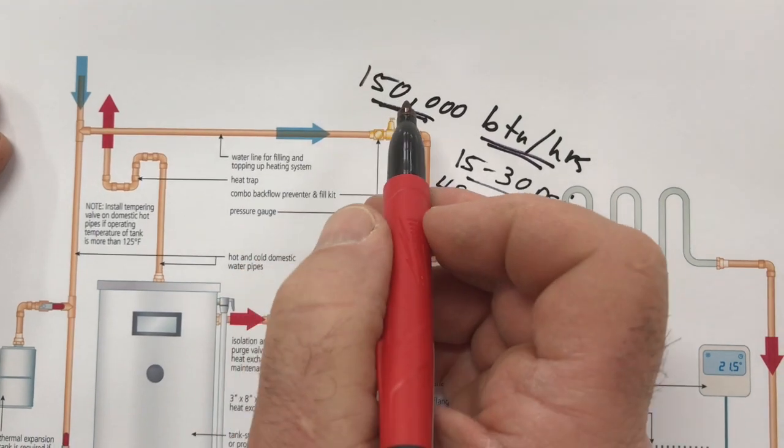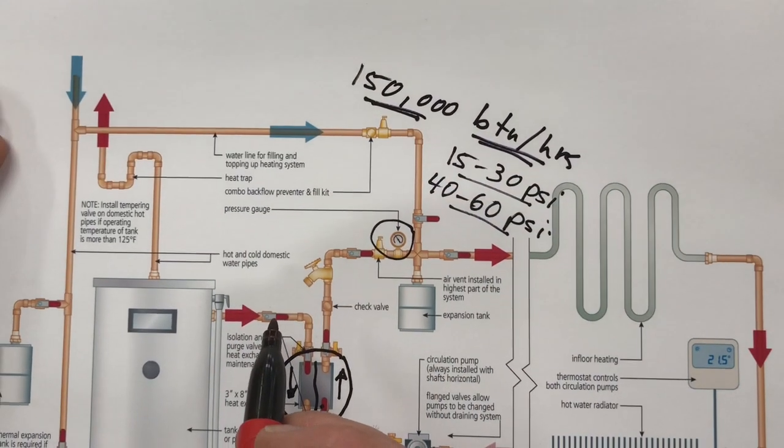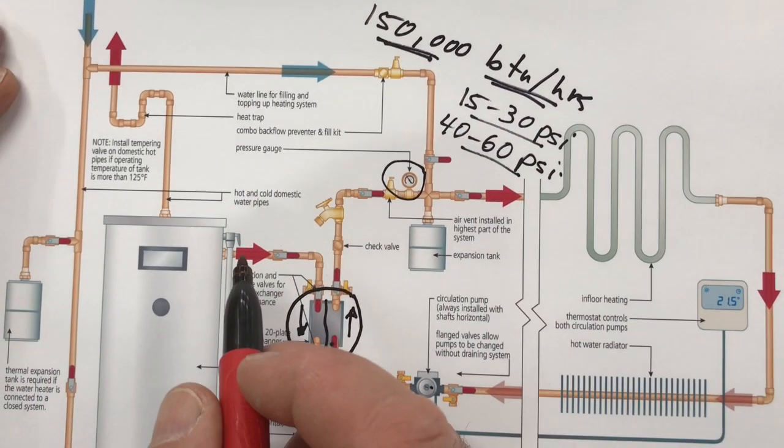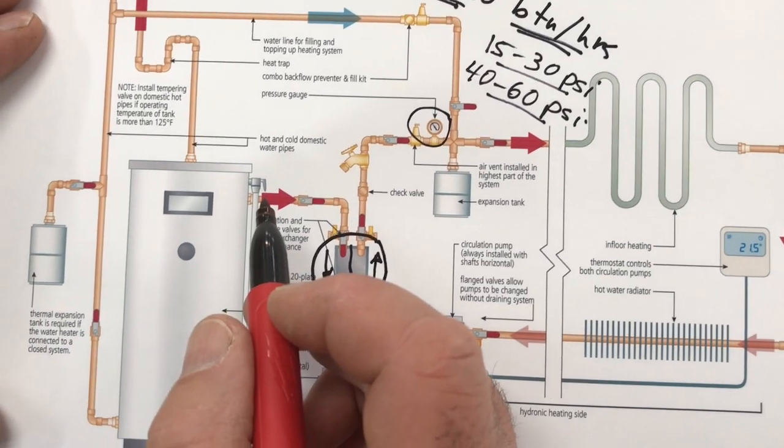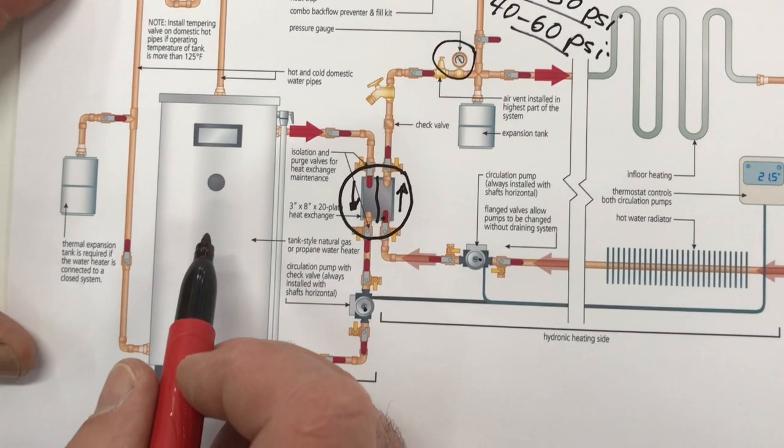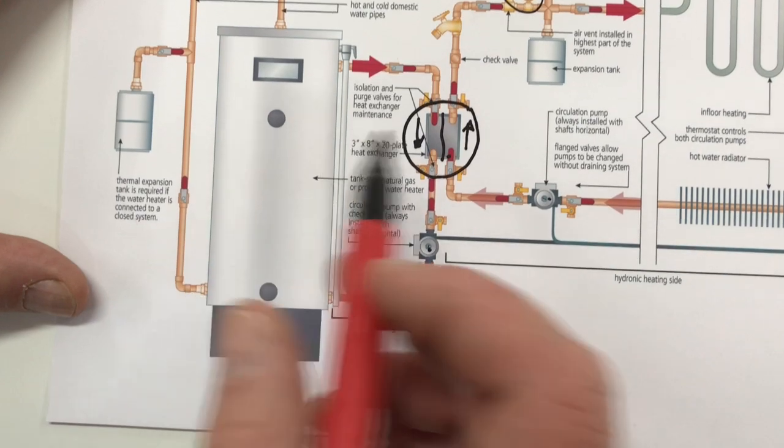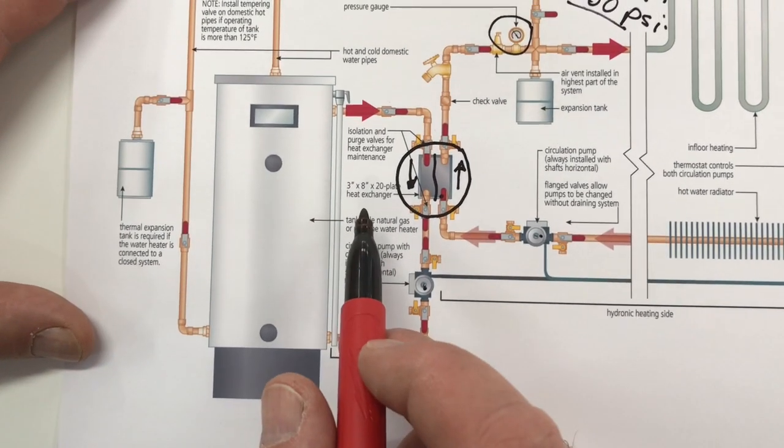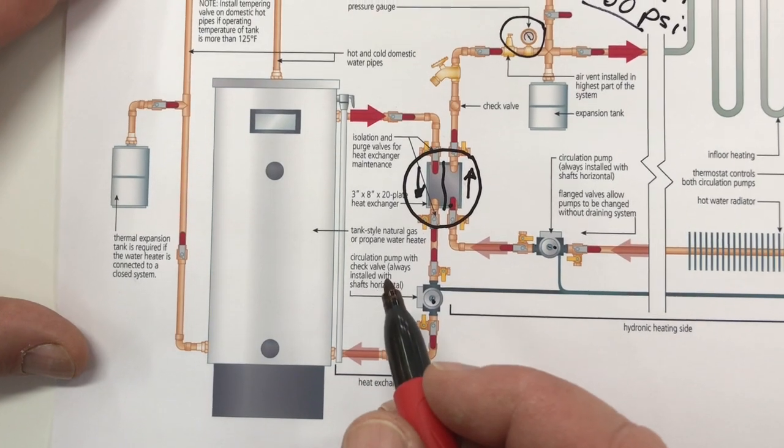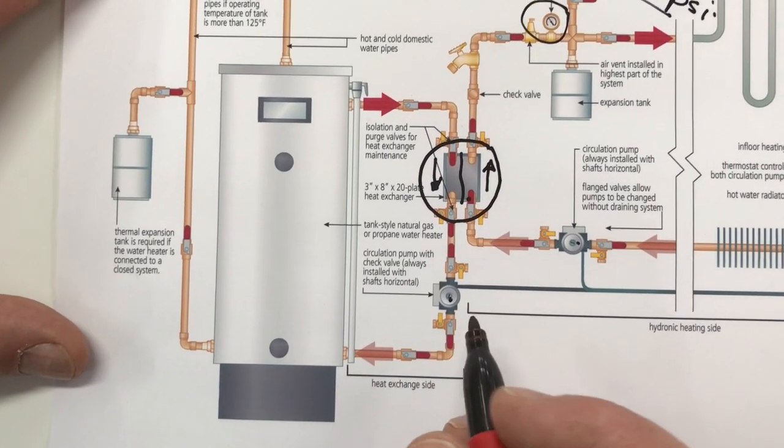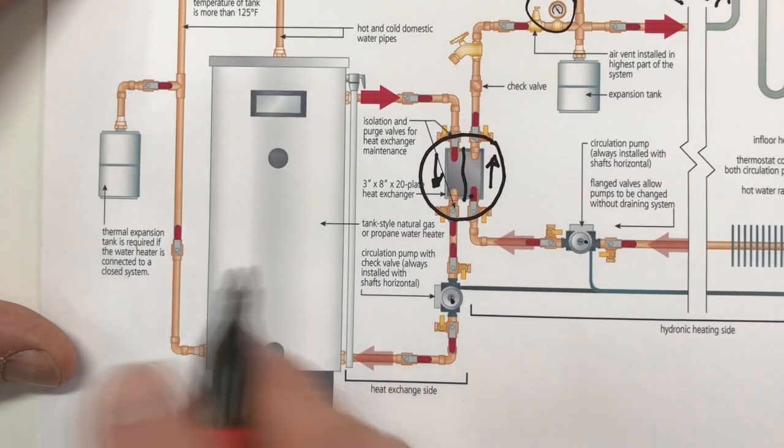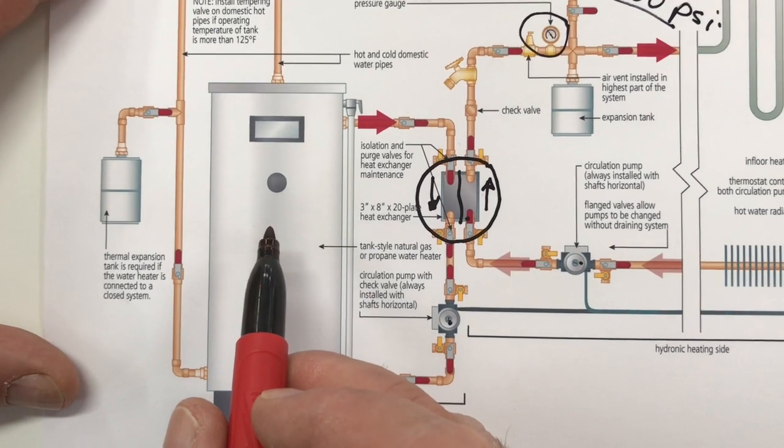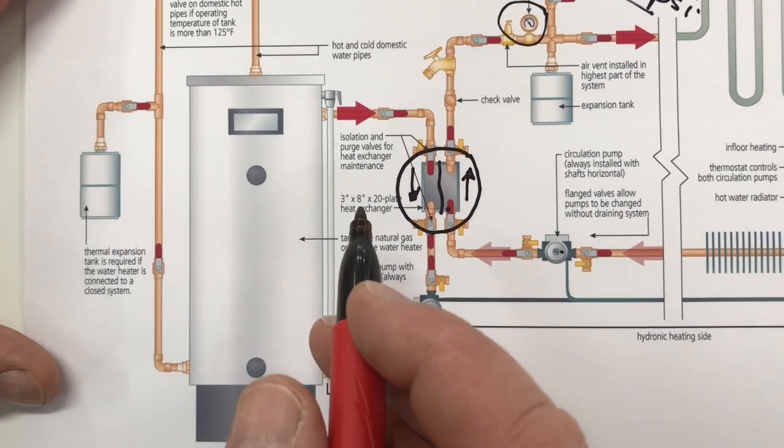But the heater also has to be able to put out heat more consistently. It's going to have a far shorter rest period when it's used as a space heating engine so you need to have a water heater that's up to the job and the manufacturer can tell you that. Some companies will not warrant their tank style heaters for this application and others will.